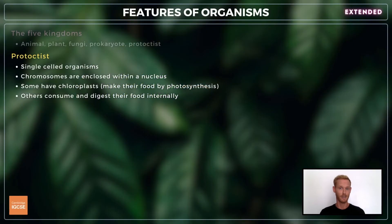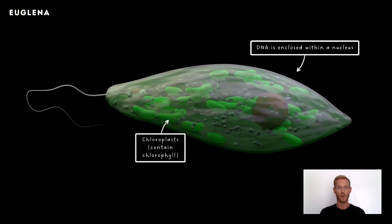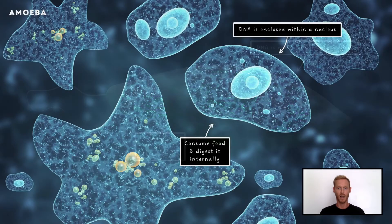The protoctist kingdom also consists of single-celled organisms, but unlike prokaryotes, their chromosomes are enclosed within a nucleus. Some protoctists have chloroplasts and make their food by photosynthesis, while others, like the amoeba, consume and digest their food internally.